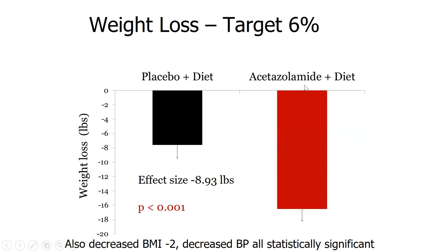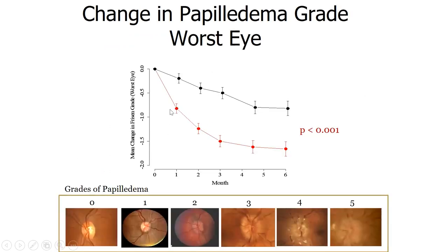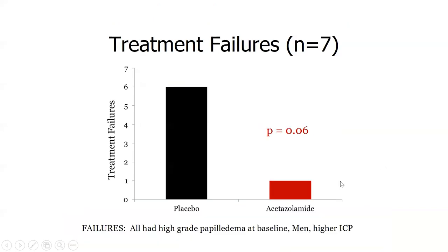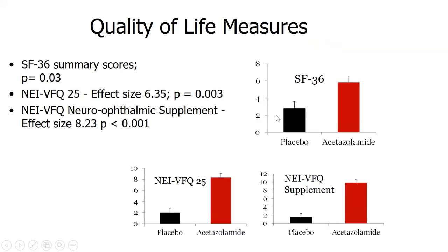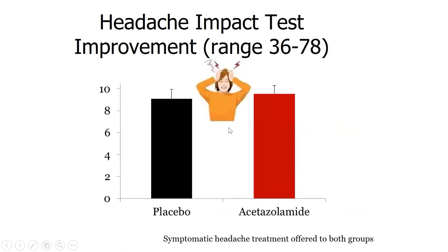Weight loss was significantly greater with acetazolamide plus diet compared to diet alone. Papilledema grade also reduced — within six months it reached a much lower grade in the acetazolamide group, and there were fewer treatment failures. Quality of life improved across all measurements with acetazolamide and diet. Unfortunately, acetazolamide did not significantly treat the headache — headaches remained similar in both groups, which is the major ongoing challenge of this disorder.